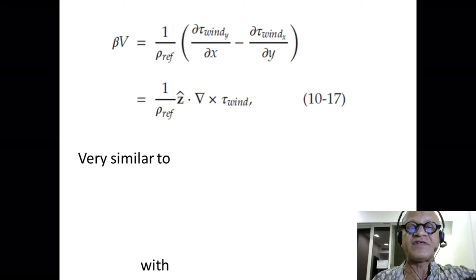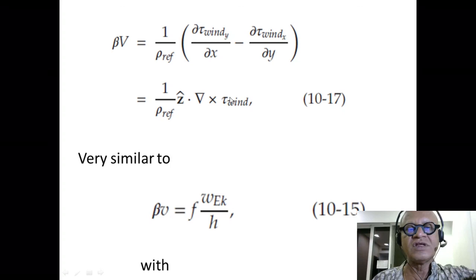Beta v equal to 1 over rho f (delta tau_y/dx minus delta tau_x/dy), which is 1 over rho f z-hat dot grad cross tau_wind. This is very similar to what we have been looking at for interior flow of beta v equals f times w_Ekman over h, except this was current, whereas this is vertically integrated transport.